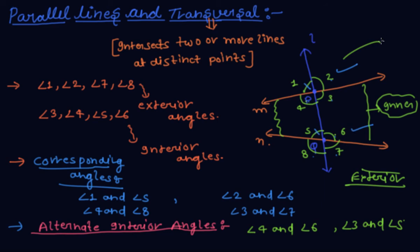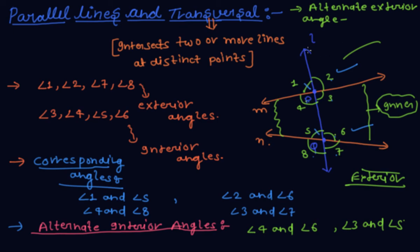Now alternate exterior angles. These are angles which exist in the exterior part and on alternate sides of the transversal. So angle 1 and angle 7, and angle 2 and angle 8 are alternate exterior angles.